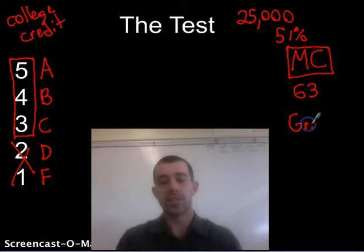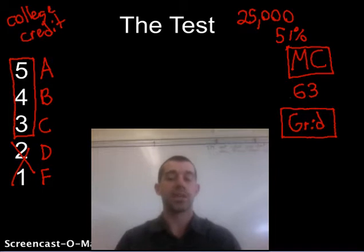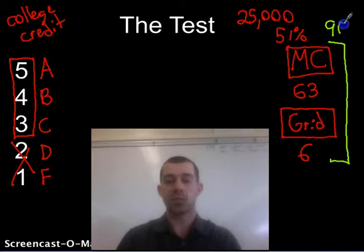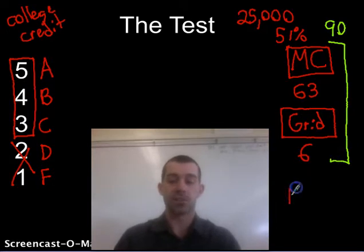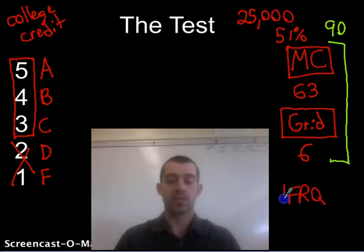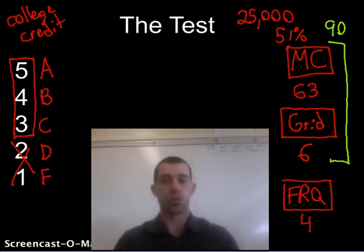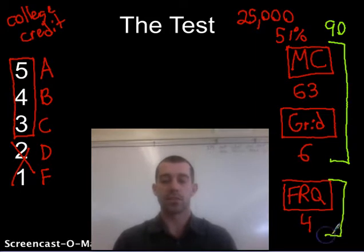The next section is the grid-in answers — mathematical calculations. You'll actually do some math on the AP Bio test. There are six of these questions, but math is scattered throughout the entire exam. These two sections are connected in one 90-minute session. After that, you have another 90-minute session for free response questions: four total — two long free response where you write an essay about scientific data, and two short free response, more of a short answer type.